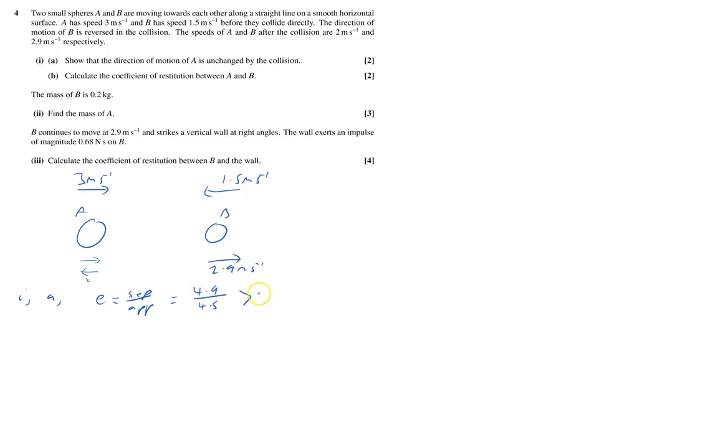And that would be greater than 1, it actually equals 1.08 recurring. So it can't go to the left, and therefore it must be this way here at 2 meters per second.